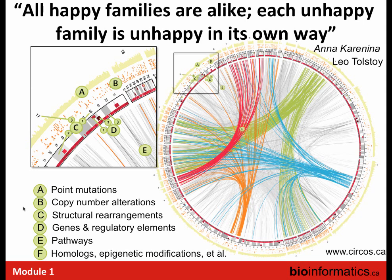Each unhappy cell — in this case a cancer cell — is unhappy in its own way. I've shown here a circos plot, which you've probably seen a lot in cancer genomics papers. It's really an attempt to take the side-by-side karyotype and make sense of it on a single page. Around the outside ring are the chromosomes ordered end-to-end, and the inset annotates all the ways DNA has been modified specifically in cancer cells. We're going to have lectures on almost all these topics: point mutations, copy number alterations, structural rearrangements where one piece of a chromosome is stuck to another, specific genes and regulatory elements, and mapping genes into networks to understand how they interact with each other and map to specific pathways.